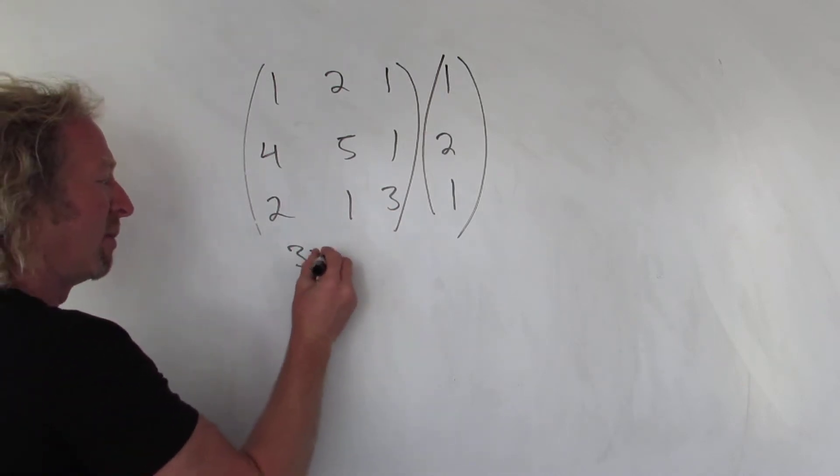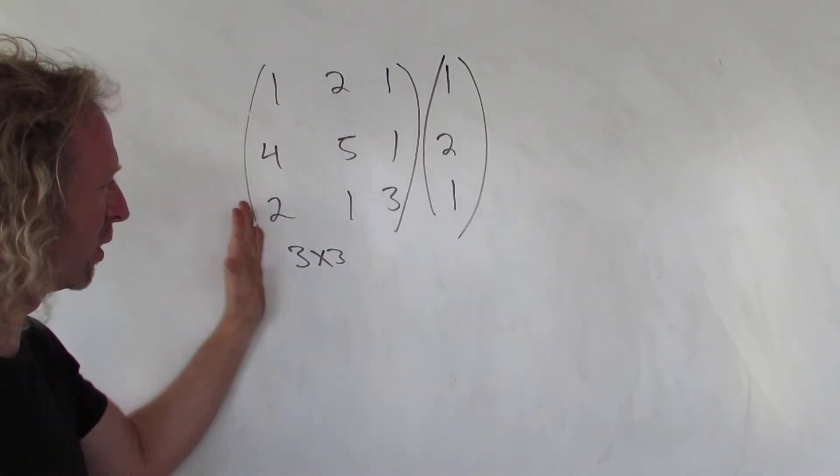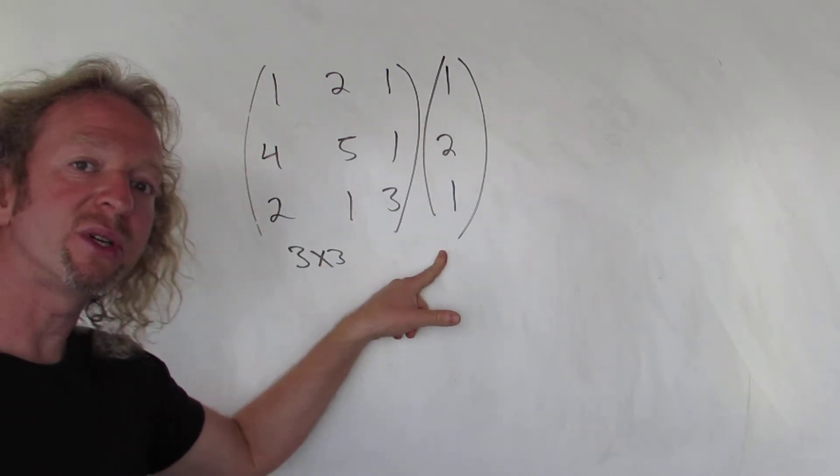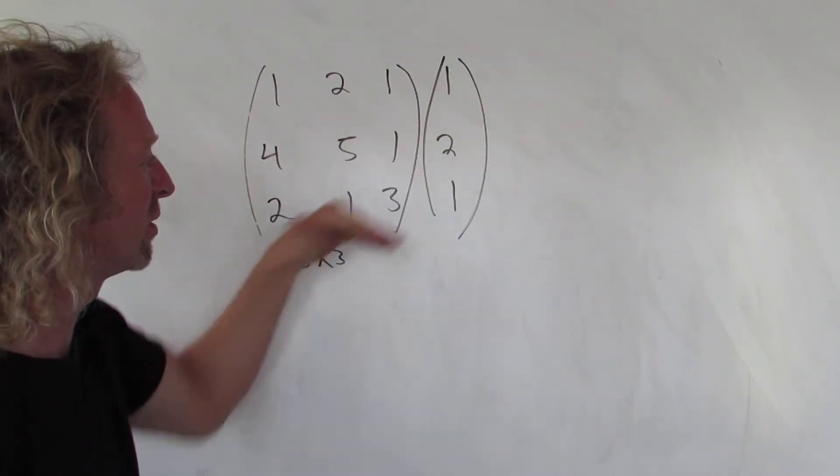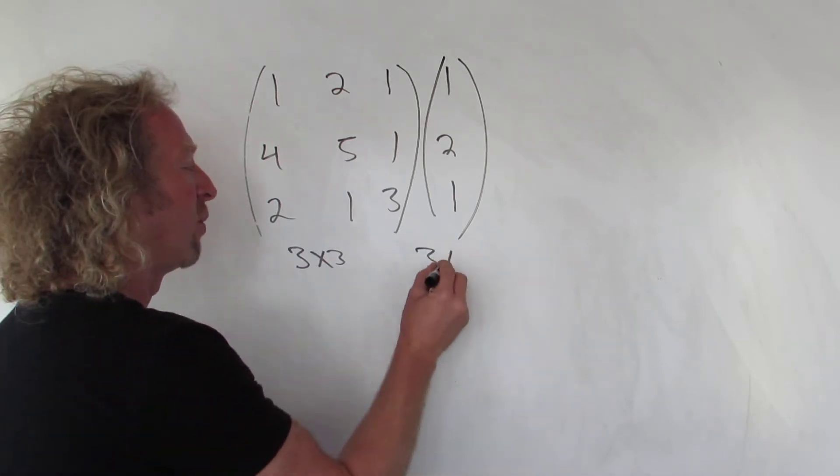So it's called a 3x3 matrix. So it's 1, 2, 3 rows, 1, 2, 3 columns. This matrix here has 1, 2, 3 rows, and just 1 column. So it's a 3x1 matrix.